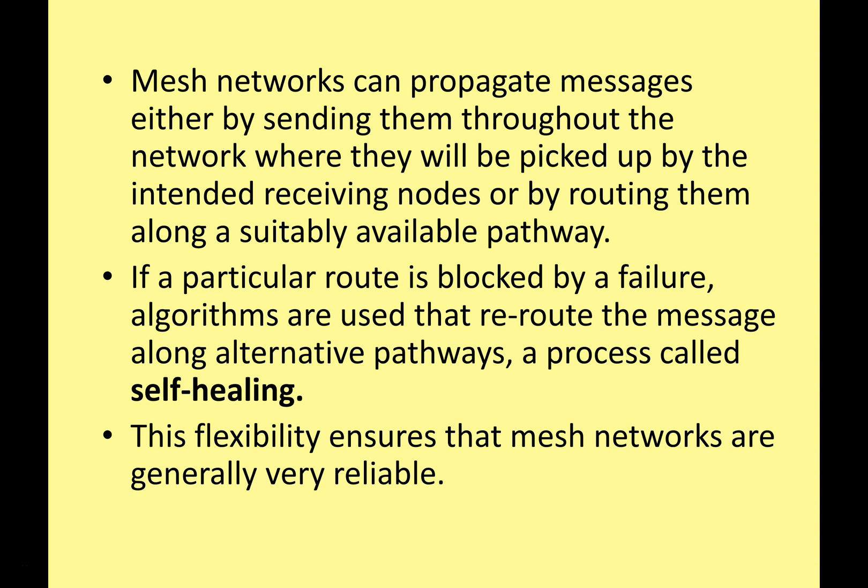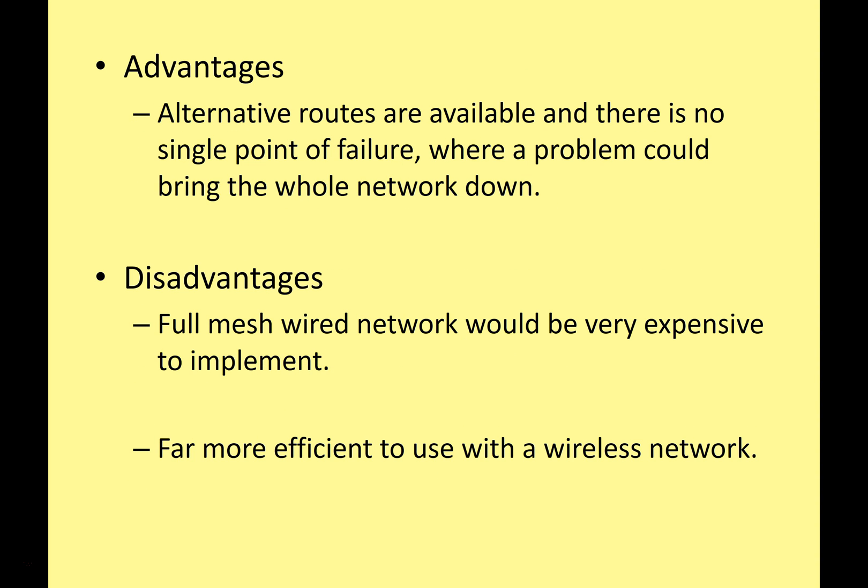In a full mesh network, every node has a circuit connecting it to every other node. With a partial mesh network, some nodes are organized this way but others might be connected to just one or two others. When data is sent across a mesh network, it might be routed along a suitable available pathway. If one of those pathways is blocked by a failure, there's something called self-healing, where a special software algorithm reroutes the message through a new route to make sure it gets to the right destination. This flexibility ensures that a mesh network is generally very reliable. It would require a lot of nodes to go offline to really disrupt it — especially a fully meshed network — because there's no single point of failure.